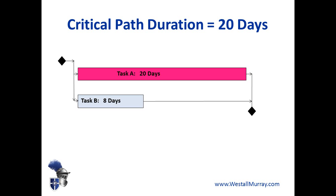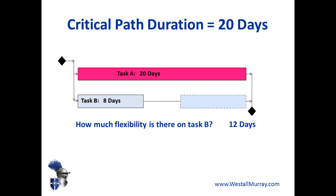Let me ask you a question: how much flexibility is there on Task B, that shorter task? Most people would just look at that and say there are 12 days of flexibility. For example, you could afford to start that task 12 days after the beginning of the project and still get the entire project done on time. Or you could start Task B, spend a couple of days on it, go away for a break for 12 days, come back and do the remaining days, and still get the project done in time.